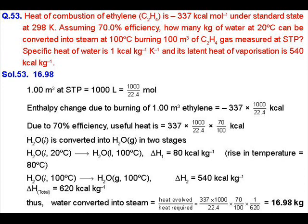The enthalpy change due to burning of 1 meter cube of ethylene will be equal to enthalpy of combustion multiplied by number of moles, which comes out to be minus 337 multiplied by 1000 divided by 22.4 kilocalories. As it's given that it's 70 percent efficient, the useful heat will be equal to 70 percent of the total heat obtained.